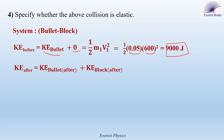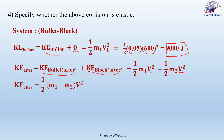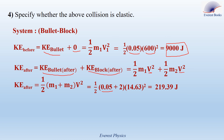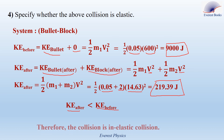The kinetic energy of the system after collision equals the kinetic energy of the bullet after collision plus that of the block after collision: one half M1 V squared plus one half M2 V squared. Rearranging by taking one half V squared as a common factor gives KE after equals one half times (M1 plus M2) times V squared. Substituting M1 equals 0.05 kg, M2 equals 2 kg, and V equals 14.63 m/s, the kinetic energy after collision is equal to 219.39 joules. Comparing: KE after is less than KE before, which means the collision is inelastic.